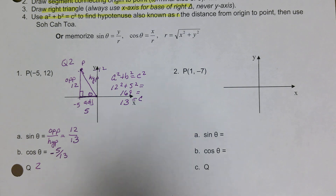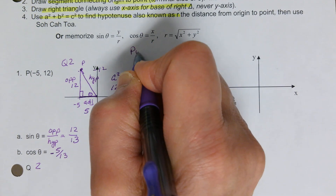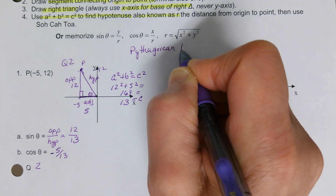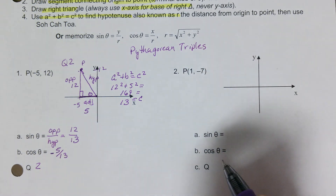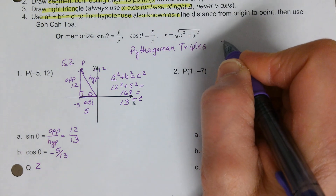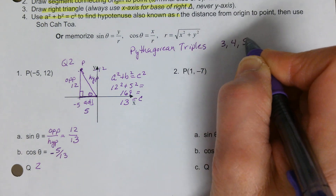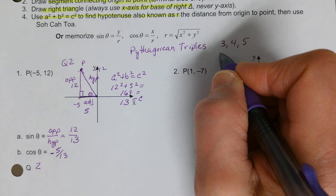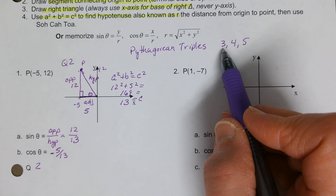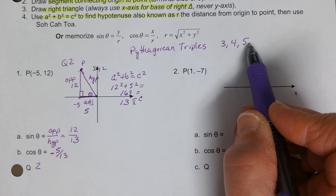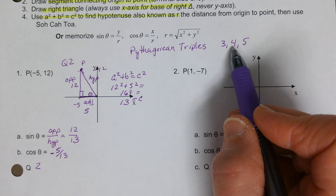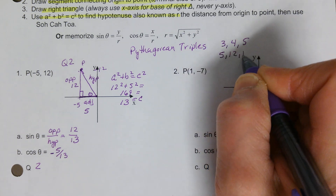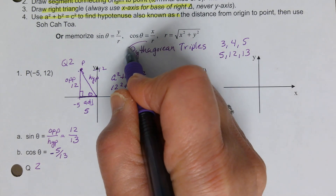Some Pythagorean triples you should be familiar with: the 3-4-5 triple, which represents the sides of a right triangle, and any multiple of it — like 6-8-10 or 9-12-15. The other one is the 5-12-13 triple. It's helpful to know those two, though you can always just work through the Pythagorean theorem.